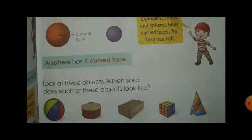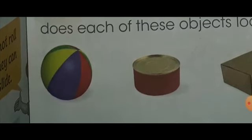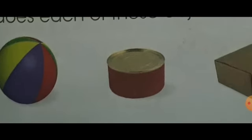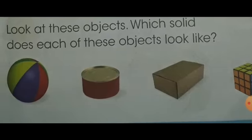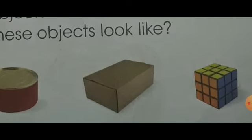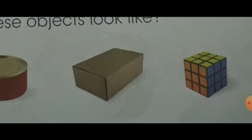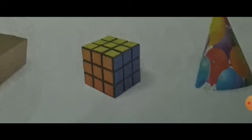Look at these objects. What solid does each of these objects look like? The first one is a ball — it is just like a sphere. A tin is the shape of a solid cylinder. Cotton — its solid name is cuboid. And this cap is a cone.